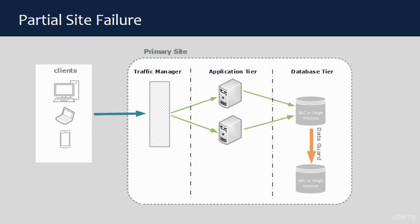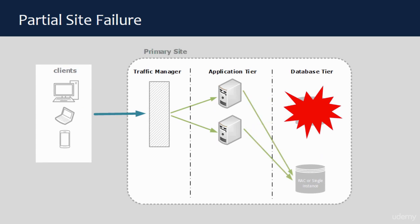By partial site failure, we mean the failure has occurred only in the database system, not in the whole site. For such a case, you would have a standby database in the same site. If the primary database fails, the application server should direct the client connections to the standby database. This is where your application failover plan plays its role. You should decide and configure how the application server should failover to the new primary database — and this is what I am going to cover in this lecture.